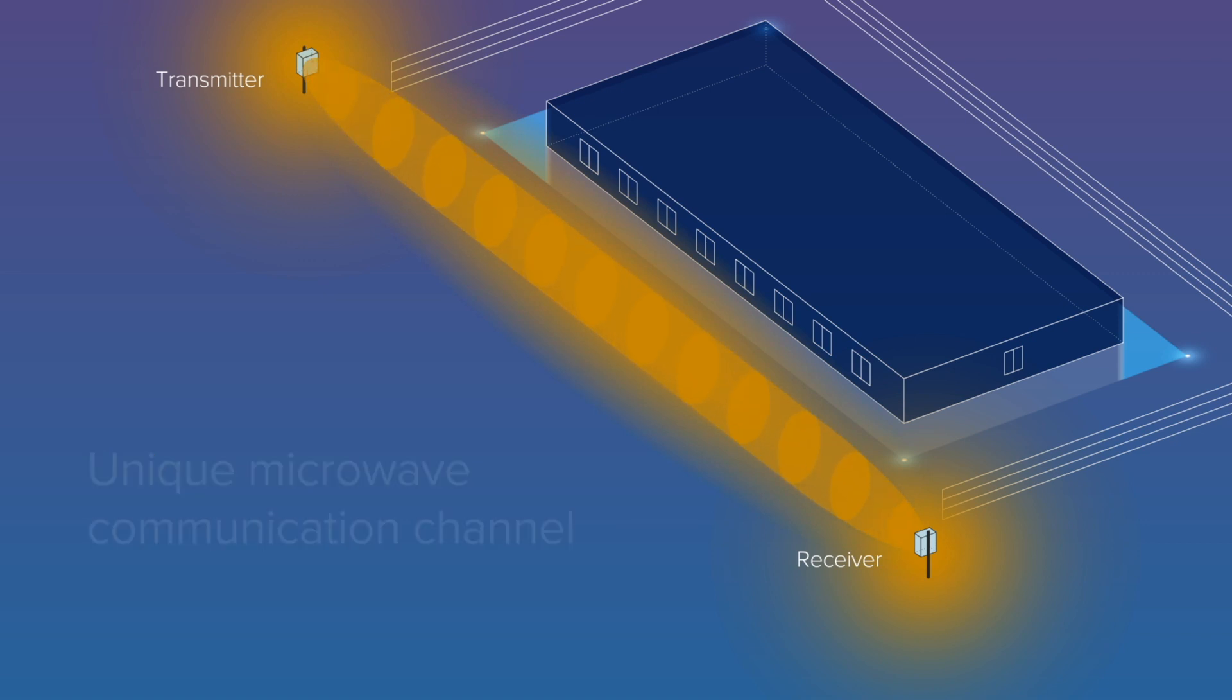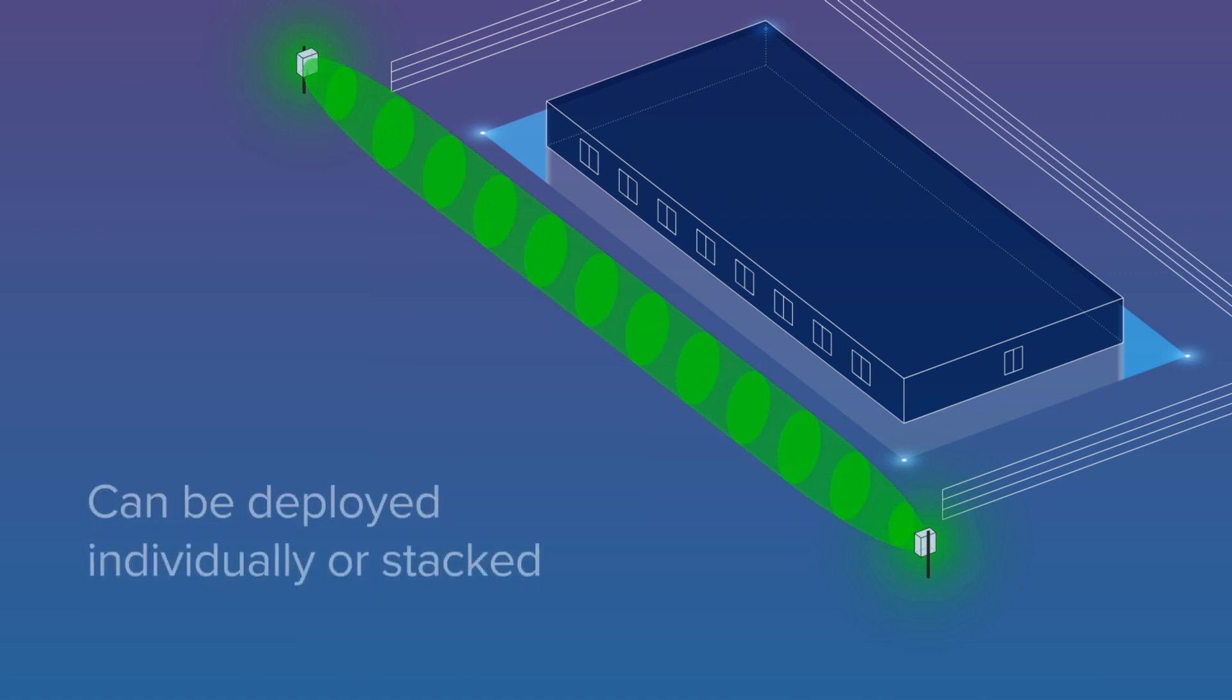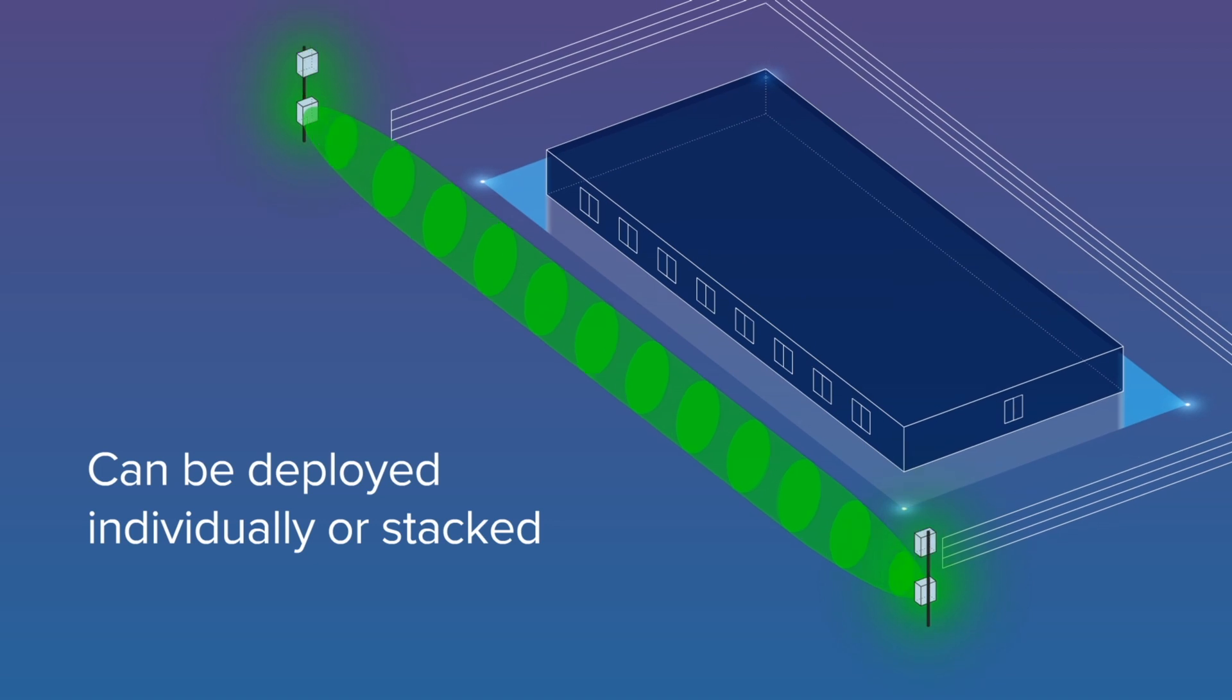This communications channel reduces infrastructure costs by eliminating the need to run networking cable to the transmitter unit. With 10 options for frequency channels, Ultrawave pairs can be deployed individually or stacked together to increase the height of the detection zone.